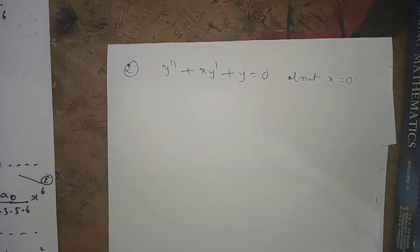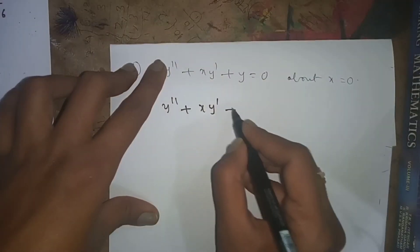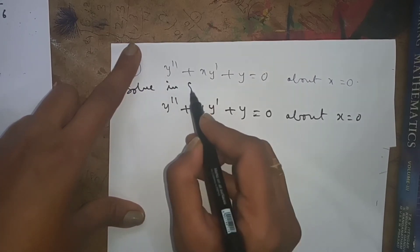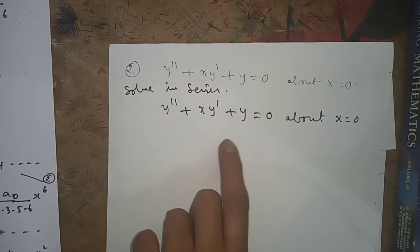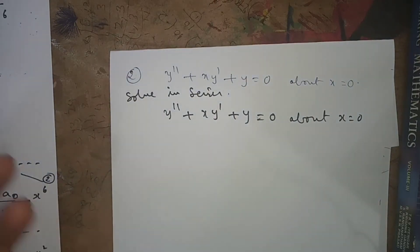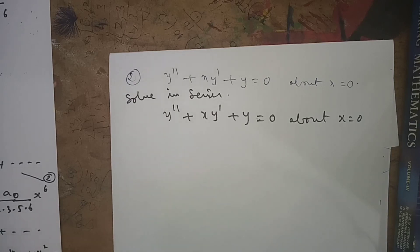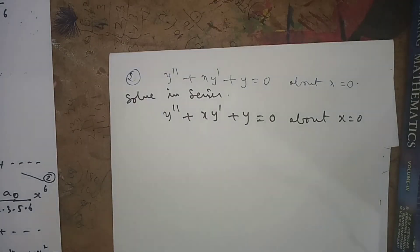As homework, solve in series: y double dash plus x·y dash plus y equals 0, about x equals 0. Follow the same method: write y as a power series, differentiate twice, find nth terms, substitute all values, collect terms by powers of x, equate coefficients to zero, find the recurrence relation, compute the remaining coefficients, and substitute back into equation 2 to get the answer.